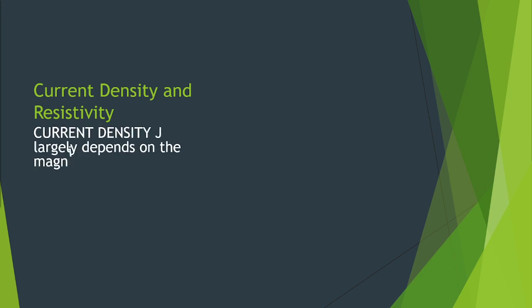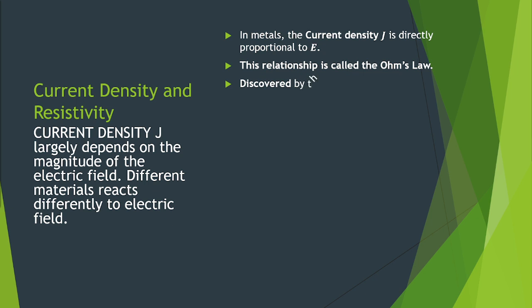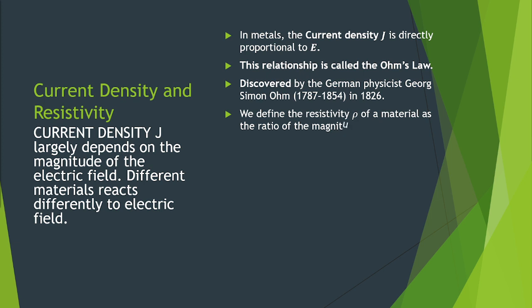We can also explore the relationship of current density J to resistivity. We find that current density J largely depends on the magnitude of the electric field. Different materials react differently to electric field. In metals, the current density J is directly proportional to E. This relationship is called the Ohm's law, discovered by the German physicist George Simon Ohm, 1787 to 1854 in 1826. We define the resistivity rho of a material as the ratio of the magnitudes of electric field and current density. We have a formula for the resistivity rho is equal to E over J. The electric field E is found using the equation rho times current density J.